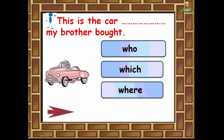Number two: 'This is the car ___ my brother bought.' Who, which, or where? The correct answer is which, because the car is an object, so we choose which.